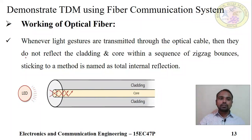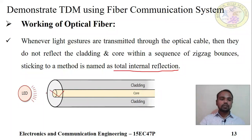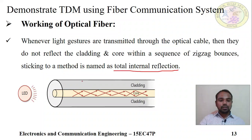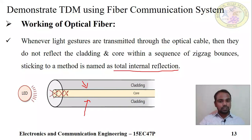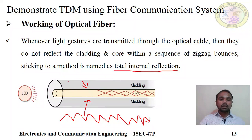The light transmitted through the fiber optic cable undergoes a sequence of zigzag bounces — this principle is named total internal reflection. The working principle of fiber optic cable is total internal reflection. The signal passes through the core in a zigzag bounce pattern and reaches the destination, because the fiber optic cable core has a different refractive index compared to the cladding.